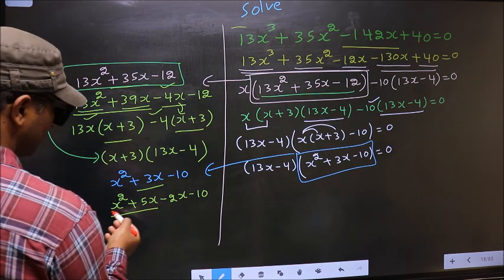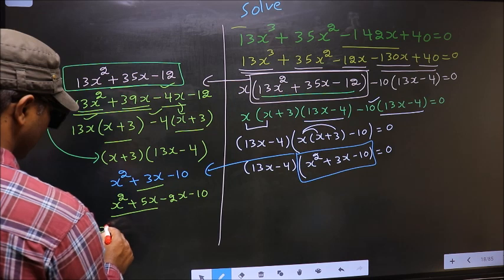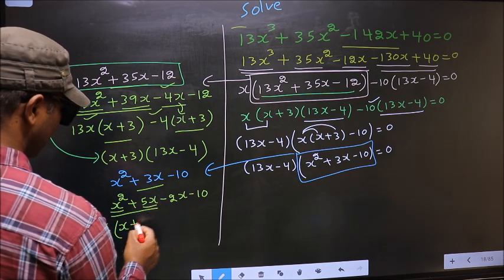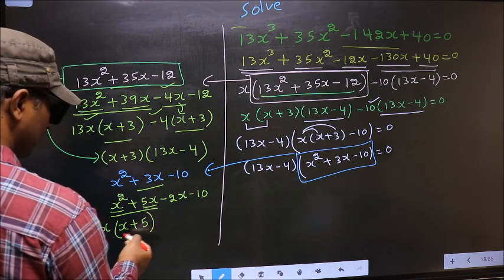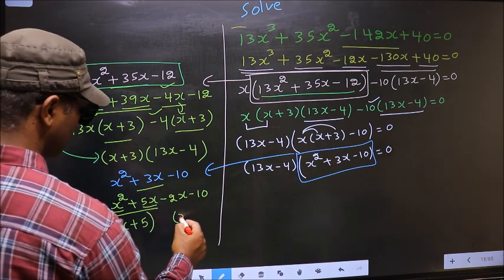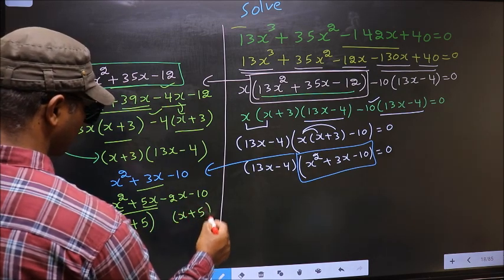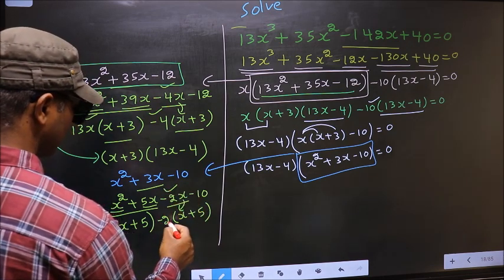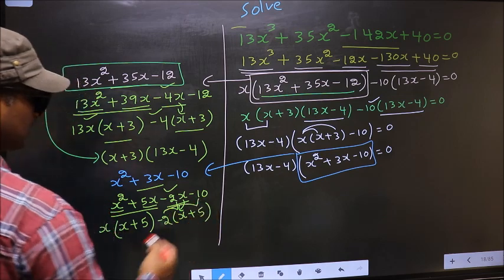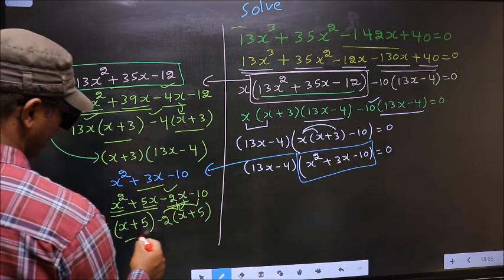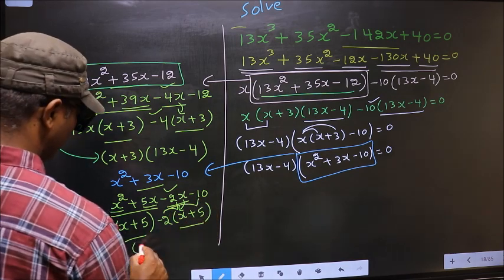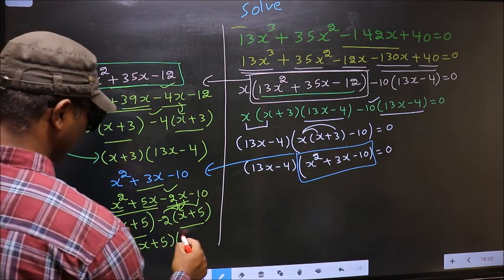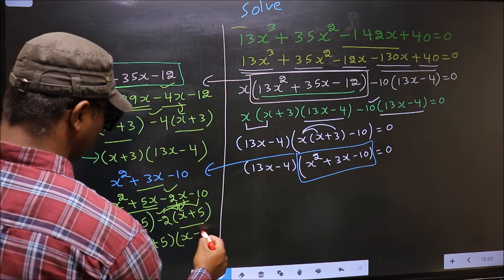What can be taken out common from the first two terms is x. So you get x(x + 5). Now whatever you got here, here also you should get the same thing. From the next terms, x has gone inside, so outside you get -2. Now take out (x + 5) common, giving (x + 5)(x - 2).